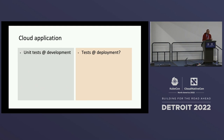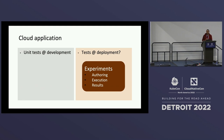Let's say we're taking this application we've developed and deploying it in Kubernetes. Don't you want to test the deployed version of the application? Of course we do. This is where experiments come in. We will simply use the term experiments as a short code for tests that you run for your deployed and running applications. We're going to look at how you can easily author these experiments, execute them, and consume results back from them.